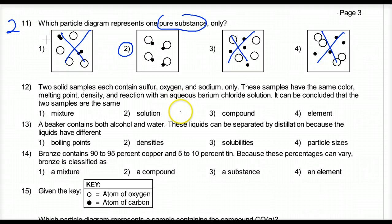Twelve. Two solid samples. Each contains sulfur, oxygen, and sodium only. These samples have the same color, the same melting point, density, and reaction. If they all have the same exact set of properties, then it must be concluded that it can't be a mixture. Mixture can vary of the different amounts. And if it was a mixture, these guys would retain their own individual properties. So if they have all the same properties when these are together, it has to be a compound.